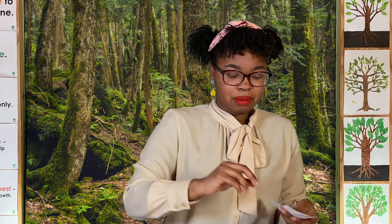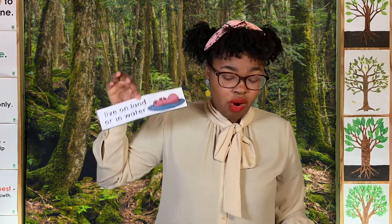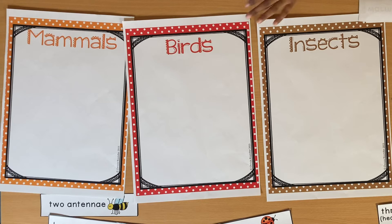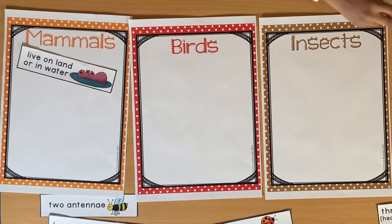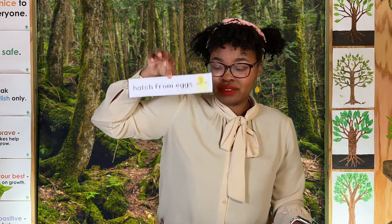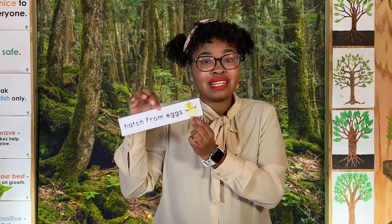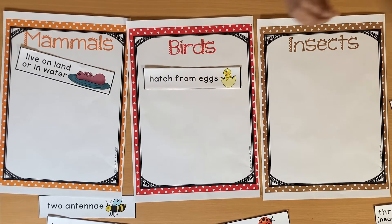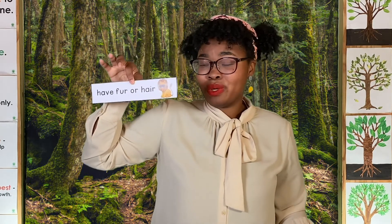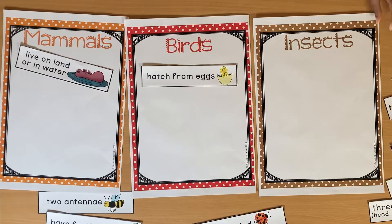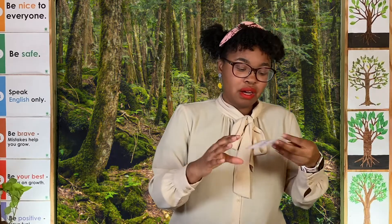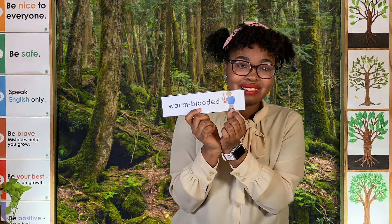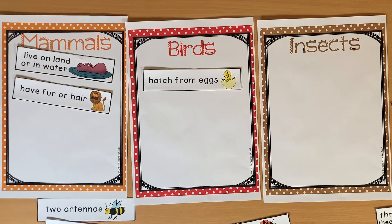Let's start the review. Which one lives on the land or in the water? They're mammals. Which one hatches from a hard-shell egg that they crack open when they're ready to come out? A bird. Which one has fur or hair — one just like us? A mammal. How about warm-blooded? We have two that are warm-blooded, but the clue is a person, and a person's classification is a mammal.